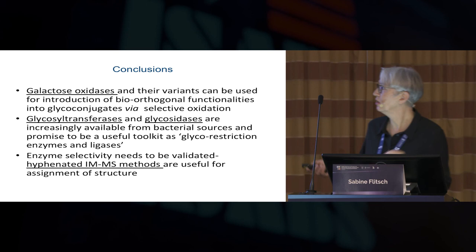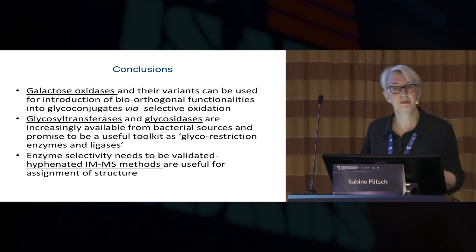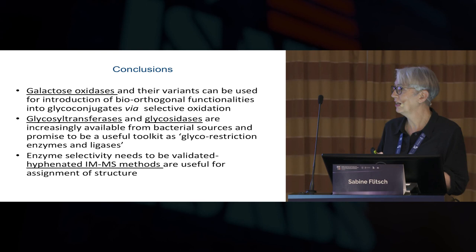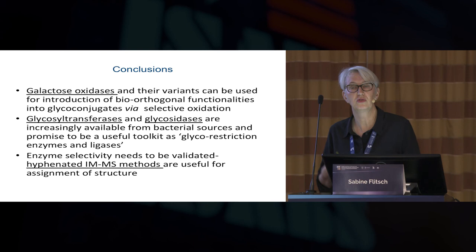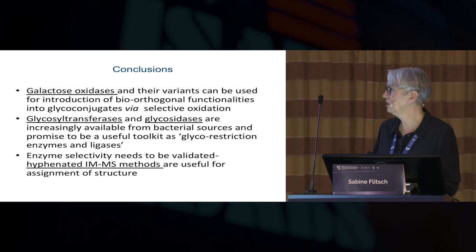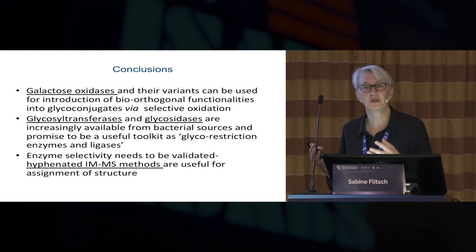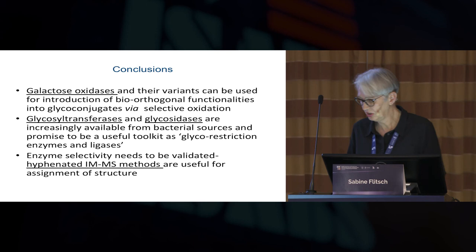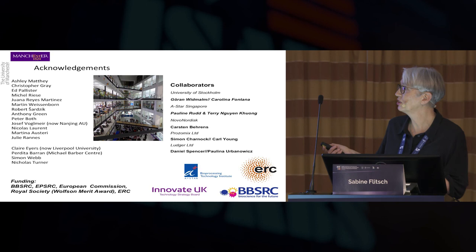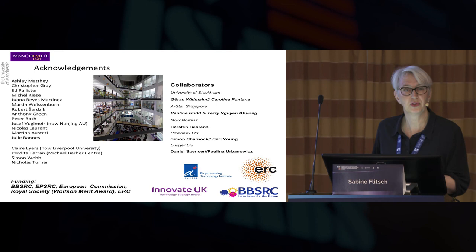In conclusion, I hope I've shown that galactose oxidases might be quite useful complementary tools for cell surface labeling of glycans. Glycosyltransferases and glycosidases are clearly important, and the challenge is to get more activities and robust enzymes available to the wider community. Ion mobility mass spectrometry is a very useful hyphenated tool to identify structures with high precision. I'd like to thank my collaborators and my group, particularly Ashley, Chris Gray, and Ed Pallister, who did a lot of the work I've shown. Thank you for your attention.